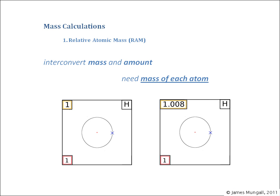Okay so just coming to the end of this now. The overall objective with mass calculations is to interconvert mass and amount. Therefore we need the mass of each atom. Therefore we're going to move away from that mass number, now we want the relative atomic mass.